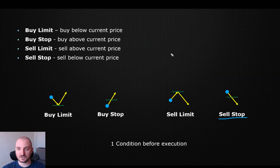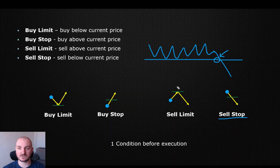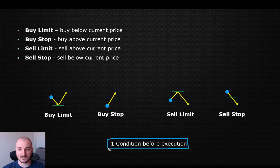On the other hand, we have the sell stop where we can give again the example of the range. We are looking for a breakout below this zone, which means we are going to put a sell stop order right here. And if the current market price drops below the level we have specified, we are going to execute a sell order right here. In other words, those four types of orders have one condition only — the price to move up or down — and this is where we are going to execute either the buy or the sell.